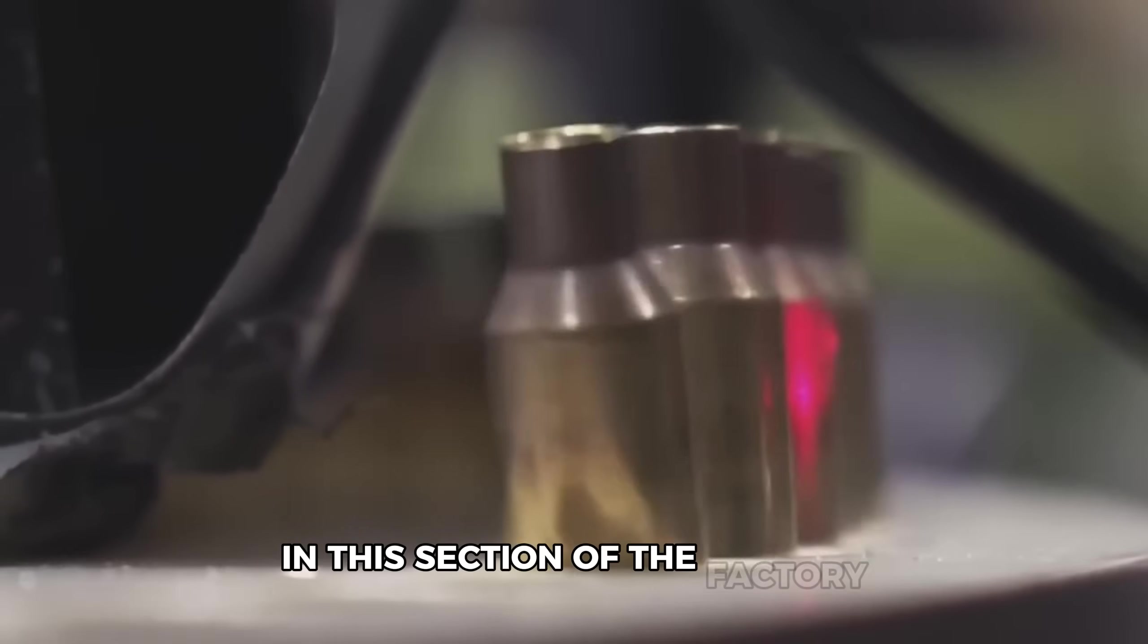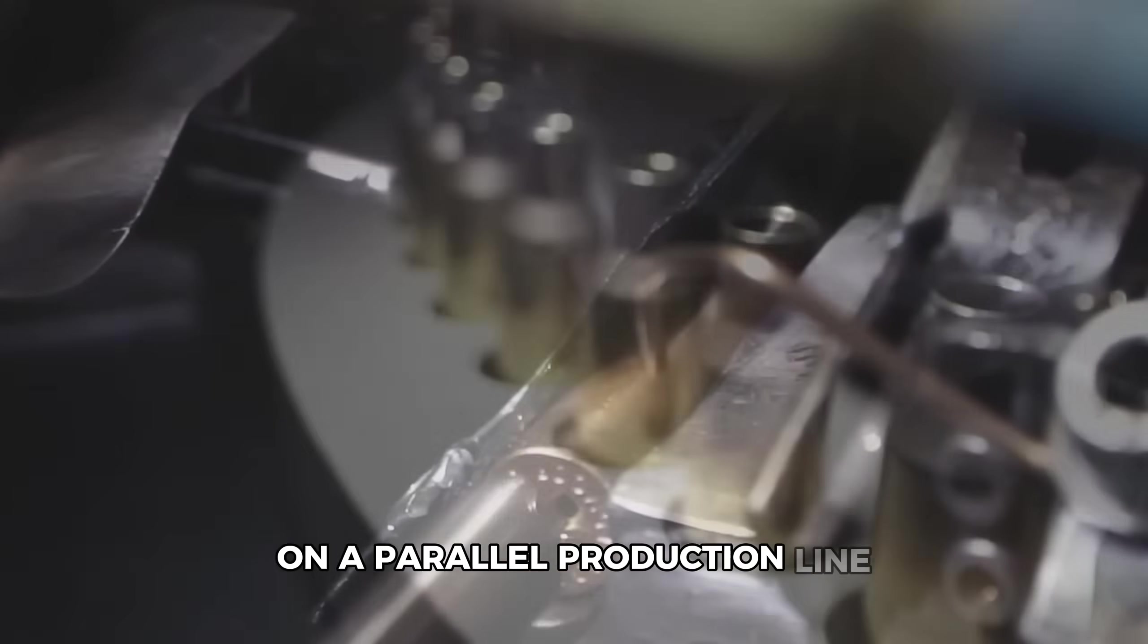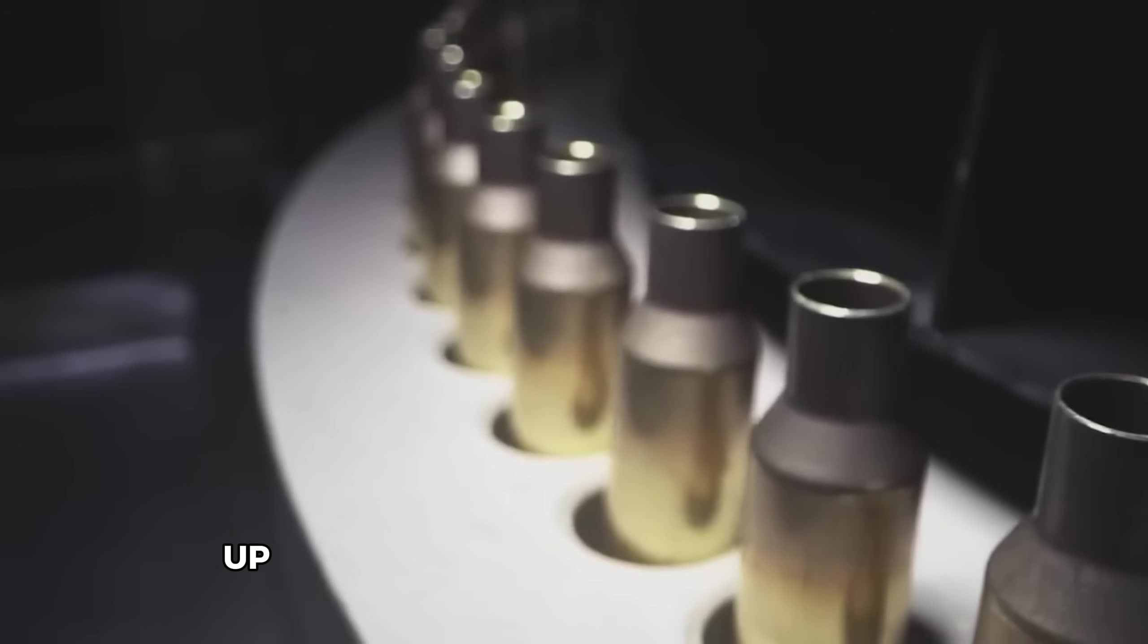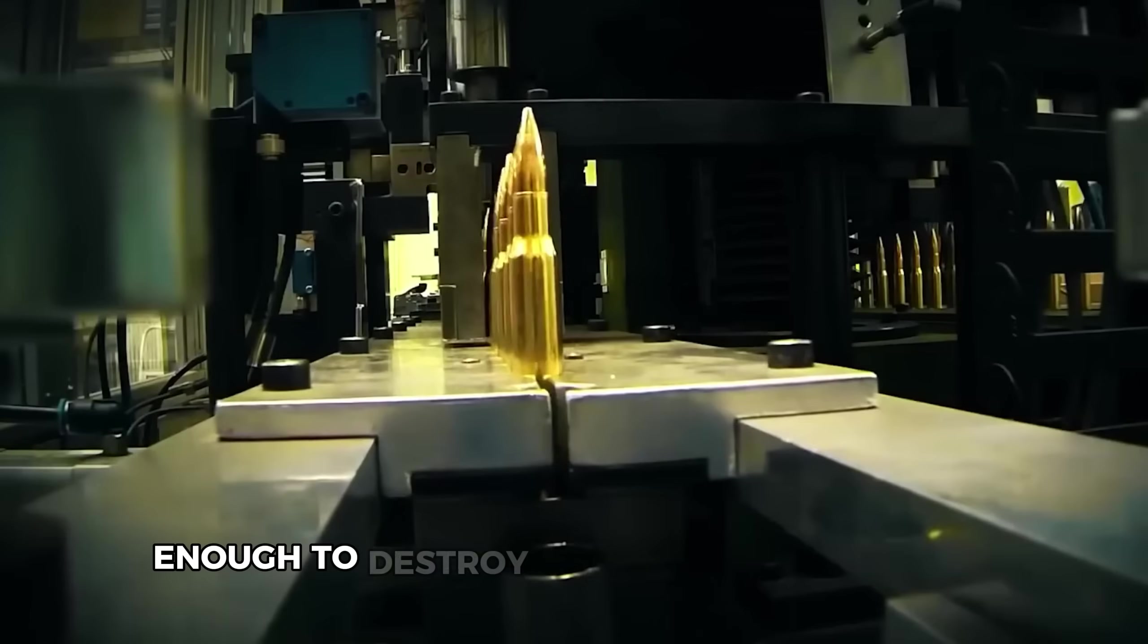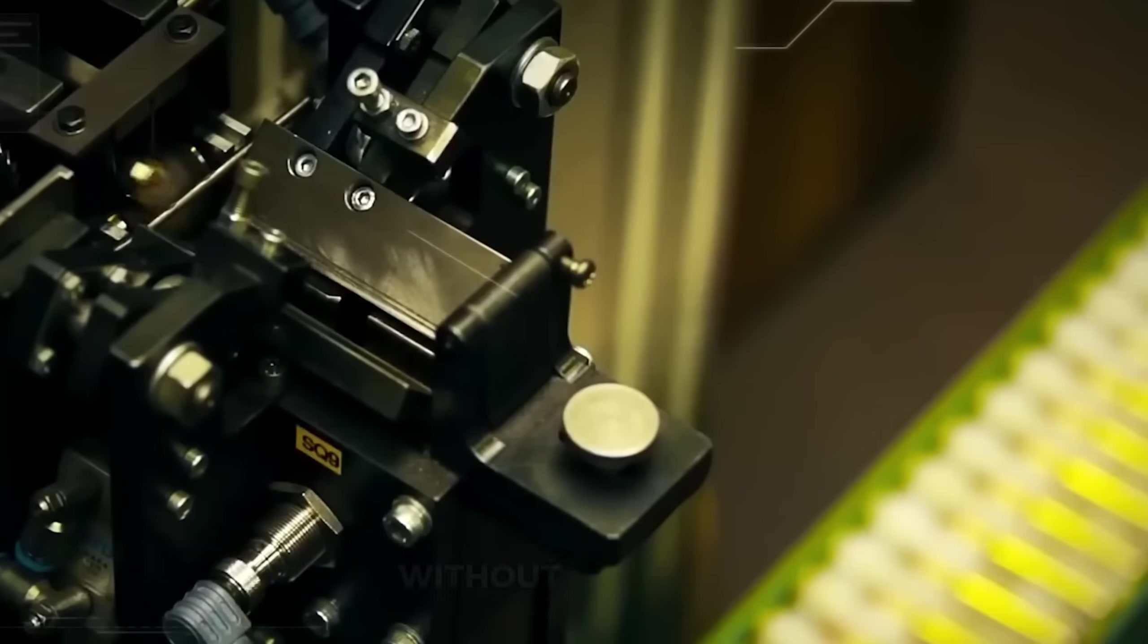In this section of the factory, we're watching brass cases take shape on a parallel production line. These components handle pressures up to 50,000 pounds per square inch, enough to destroy most everyday objects, while remaining flexible enough to extract without breaking.